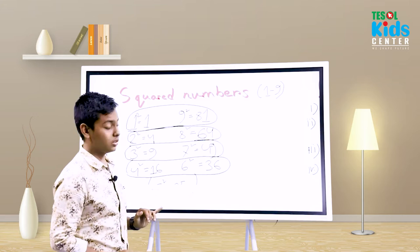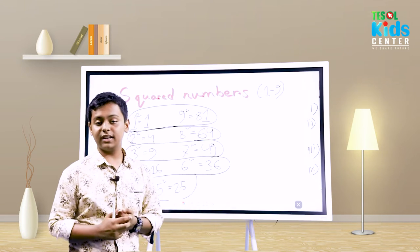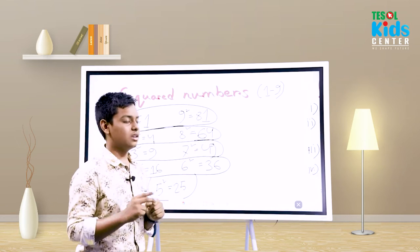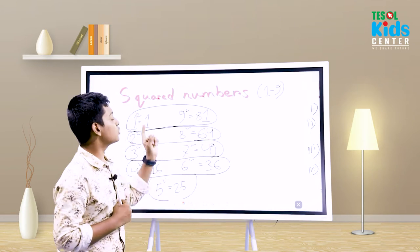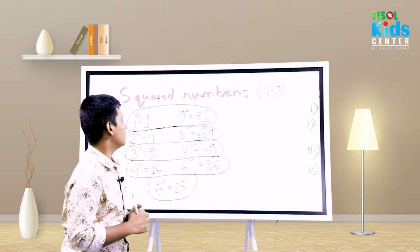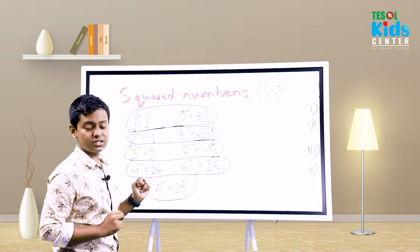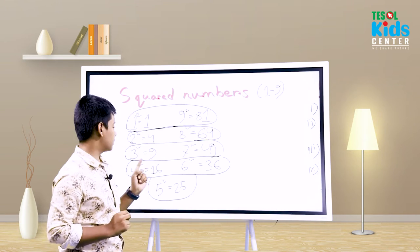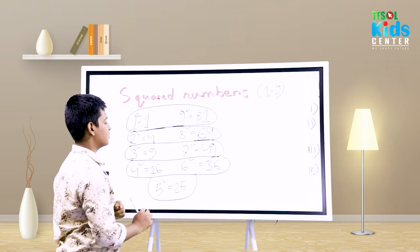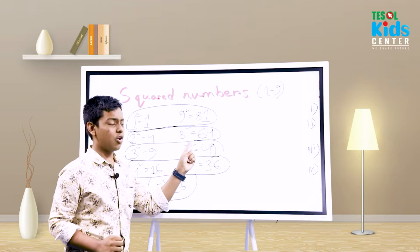First of all, to learn the technique of finding square roots, we have to memorize the square numbers from 1 to 9. 1 squared is 1, 2 squared is 4, 3 squared is 9, 4 squared is 16, 5 squared is 25, 6 squared is 36, 7 squared is 49, 8 squared is 64, 9 squared is 81.